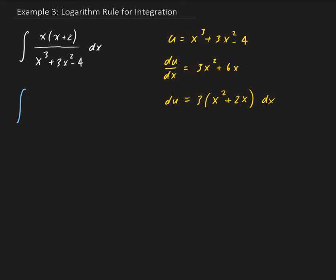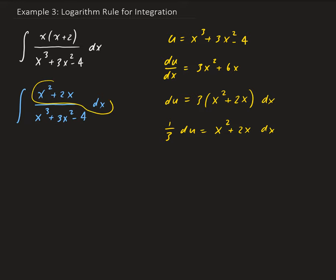So we can go ahead and rewrite our integral as x squared plus 2x, all divided by x cubed plus 3x squared minus 4. We have (1/3)du equals x squared plus 2x, so this part here is going to get replaced by (1/3)du.